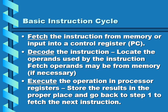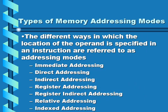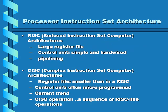The instruction cycle describes how the computer operates. First, the processor fetches instructions from memory — RAM is where all running programs are stored. Then it decodes the instruction, locating the operands used to make sense of what it fetched. Finally, it executes the operation in the processor registers.